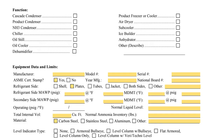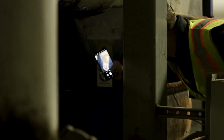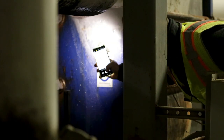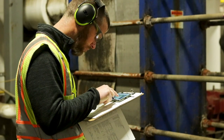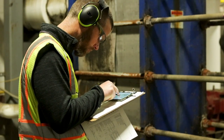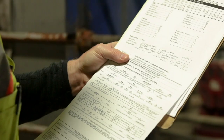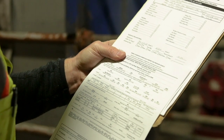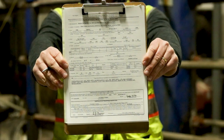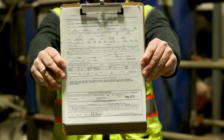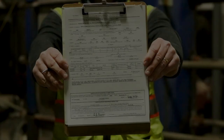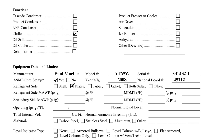Much of the information requested in the section titled Equipment Data and Limits can be obtained from the heat exchanger nameplate. A camera can be useful for difficult-to-reach nameplates. The nameplate for this plate and frame heat exchanger is only partially legible, so the Manufacturer Data Report, or U1A form, can be referenced to fill out the information that cannot be deciphered on the nameplate.